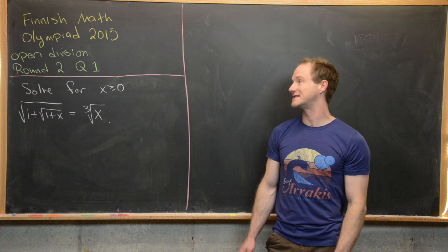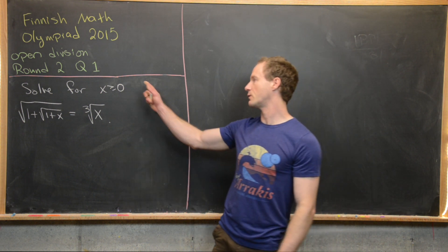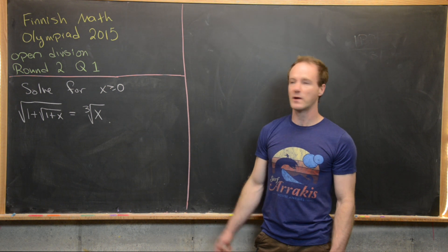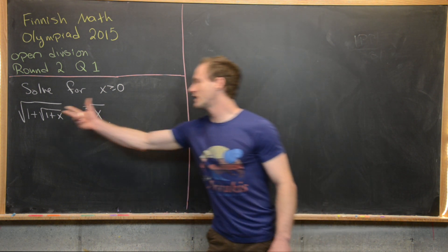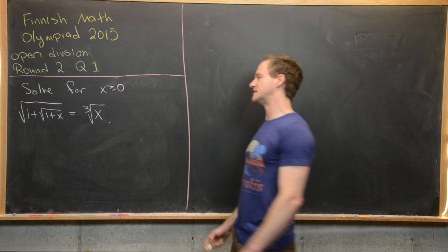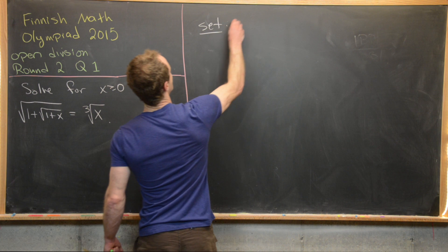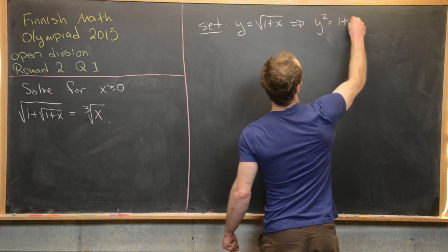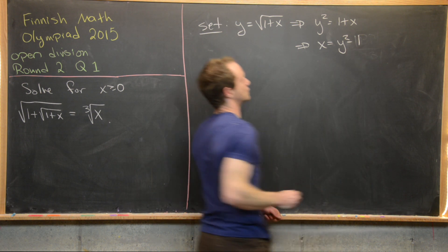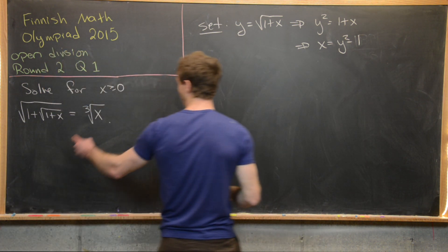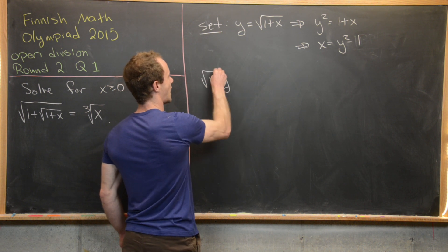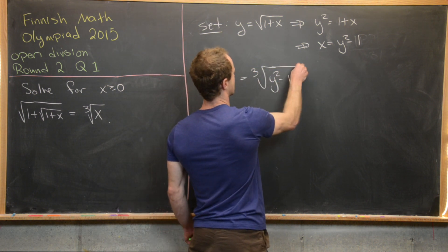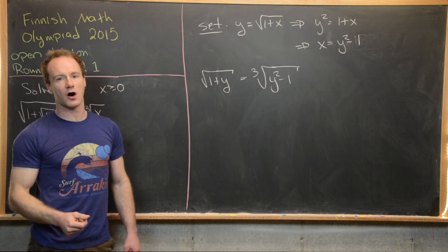Now we're going to look at another question from the same exam — round two, question one. We want to find all non-negative real solutions to: the square root of (1 + the square root of (1 + x)) equals the cube root of x. To denest the square root, let's substitute y equals the square root of (1 + x), so y² = 1 + x, meaning x = y² − 1. Plugging in gives: the square root of (1 + y) equals the cube root of (y² − 1).